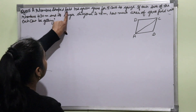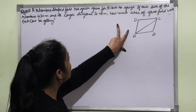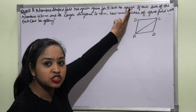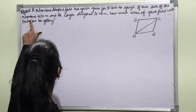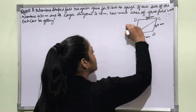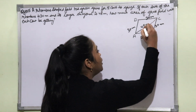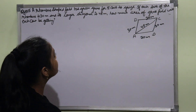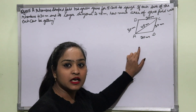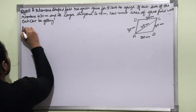Question number 5: A rhombus-shaped field has green grass for 18 cows to graze. Each side of the rhombus is 30 meters and its longer diagonal is 48 meters. How much area of grass field will each cow be getting? We need to find this area.